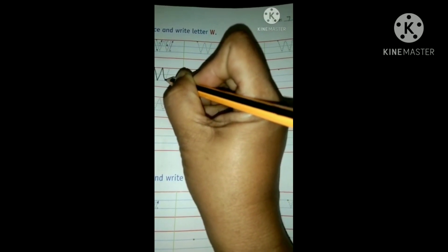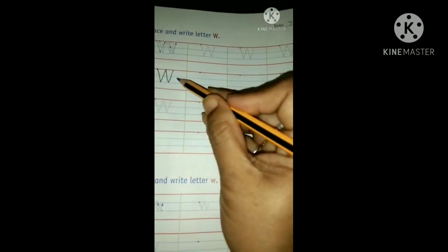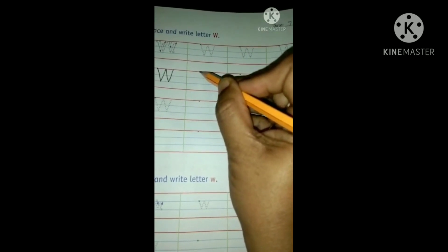Again, get down. Go up. Done. Capital letter W, from red line to second blue line.